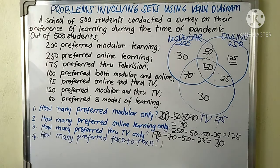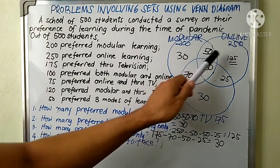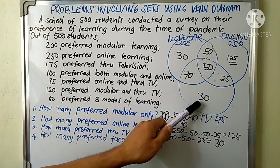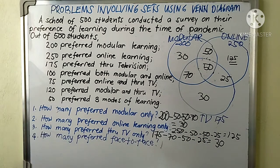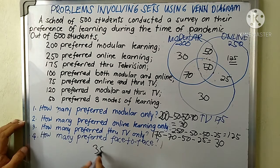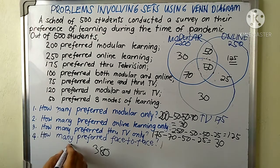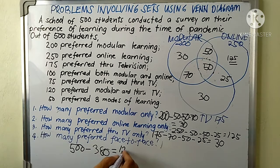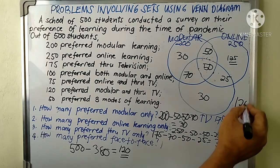Question four: how many preferred face-to-face? Since there are 500 students total, we add all the numbers inside the circles. The total comes to 380. Then 500 minus 380 equals 120. This is the number of students who did not prefer any of the three remote modes but wanted face-to-face learning. This 120 is still part of our Venn diagram, placed outside the three circles.